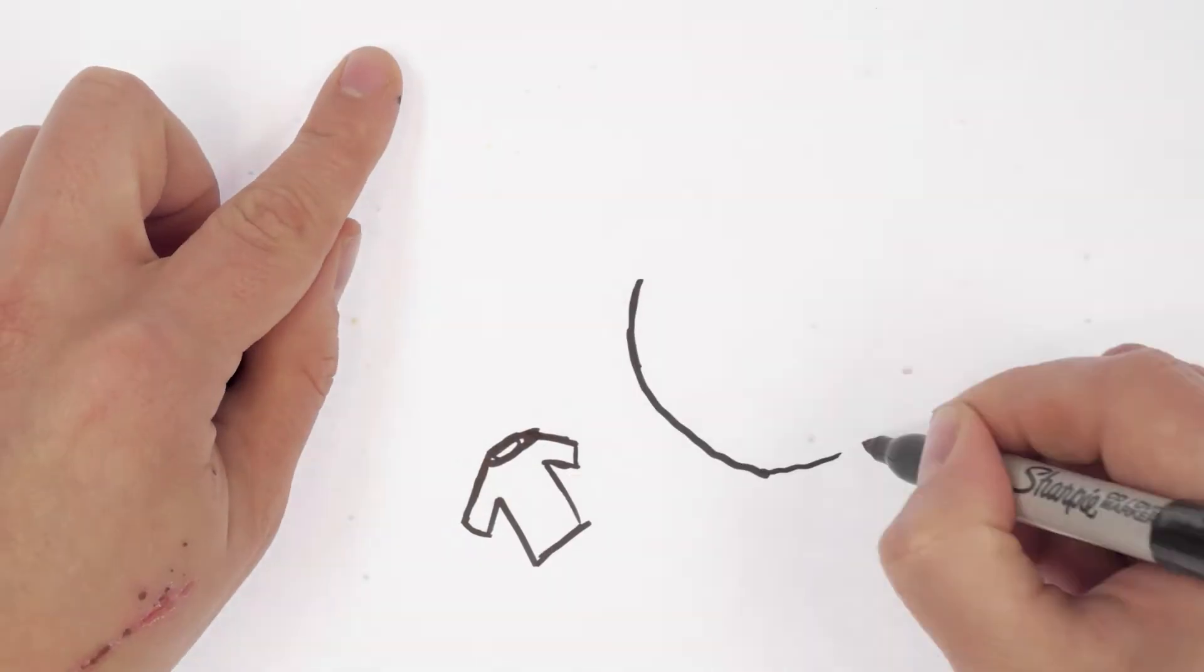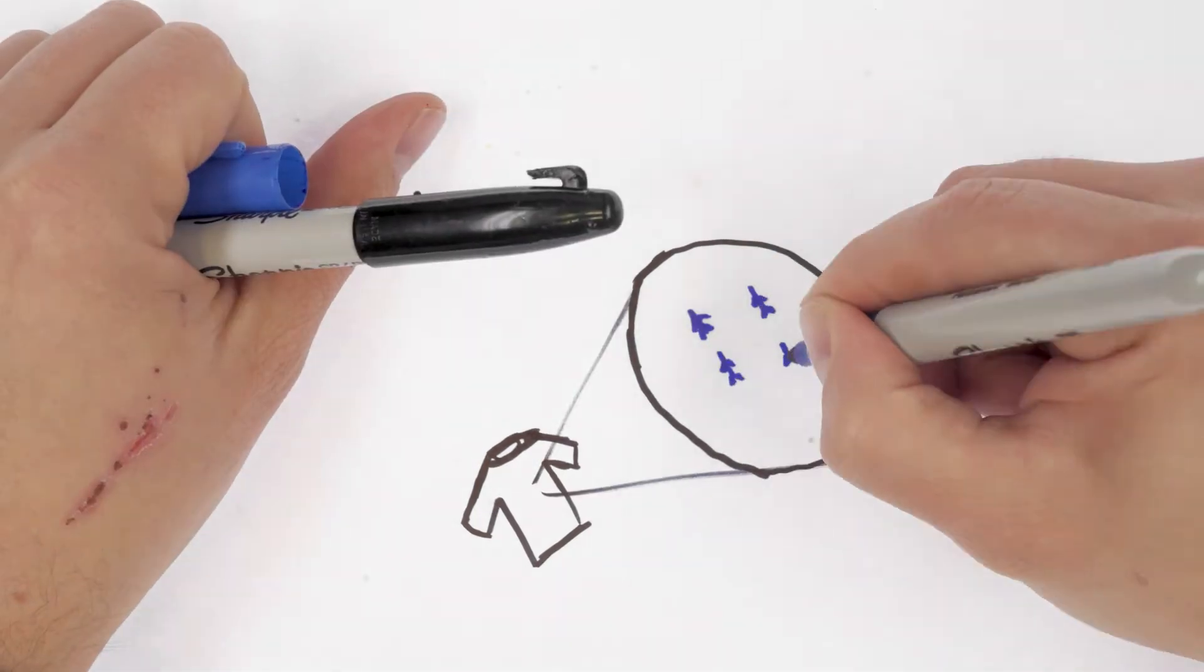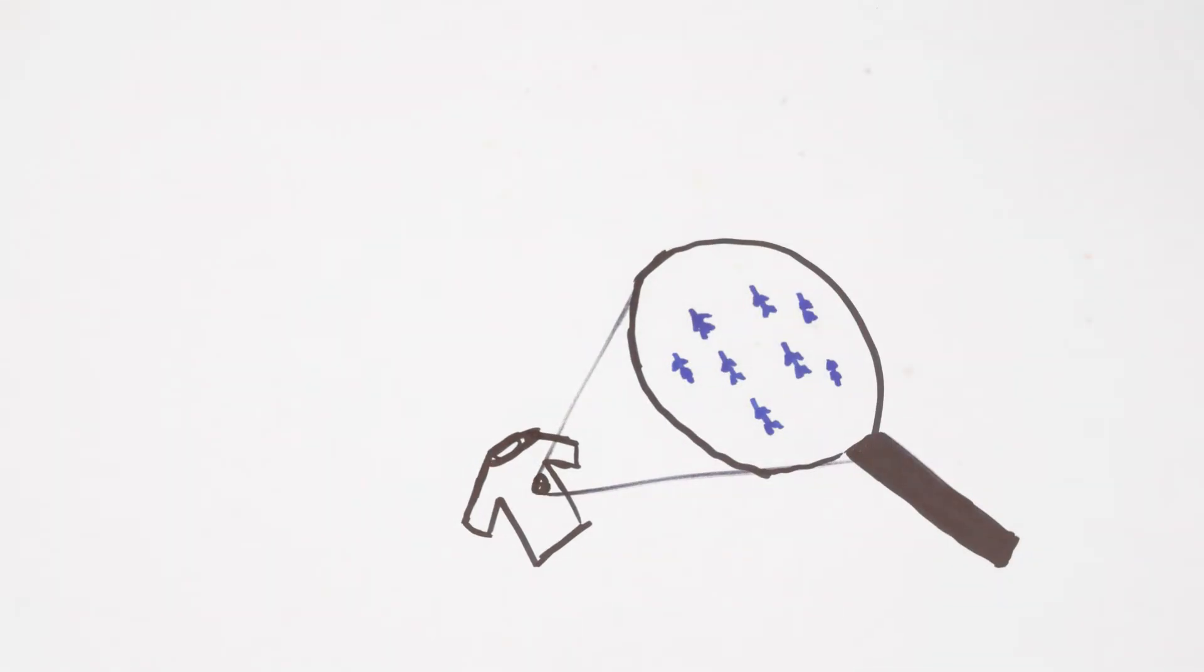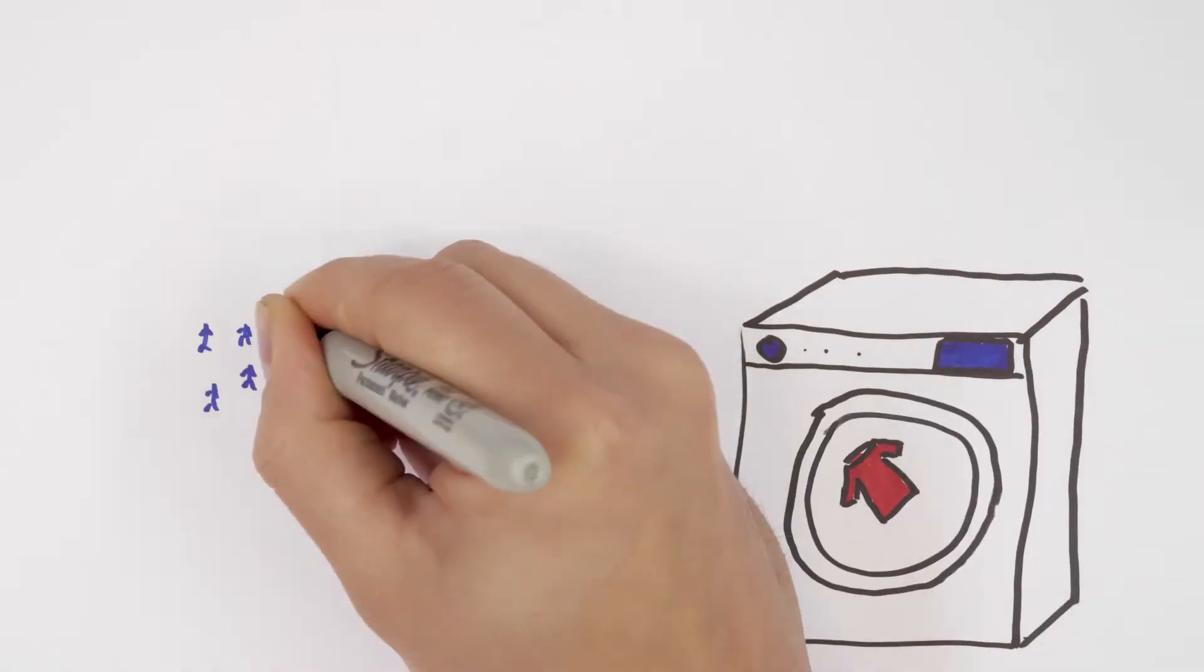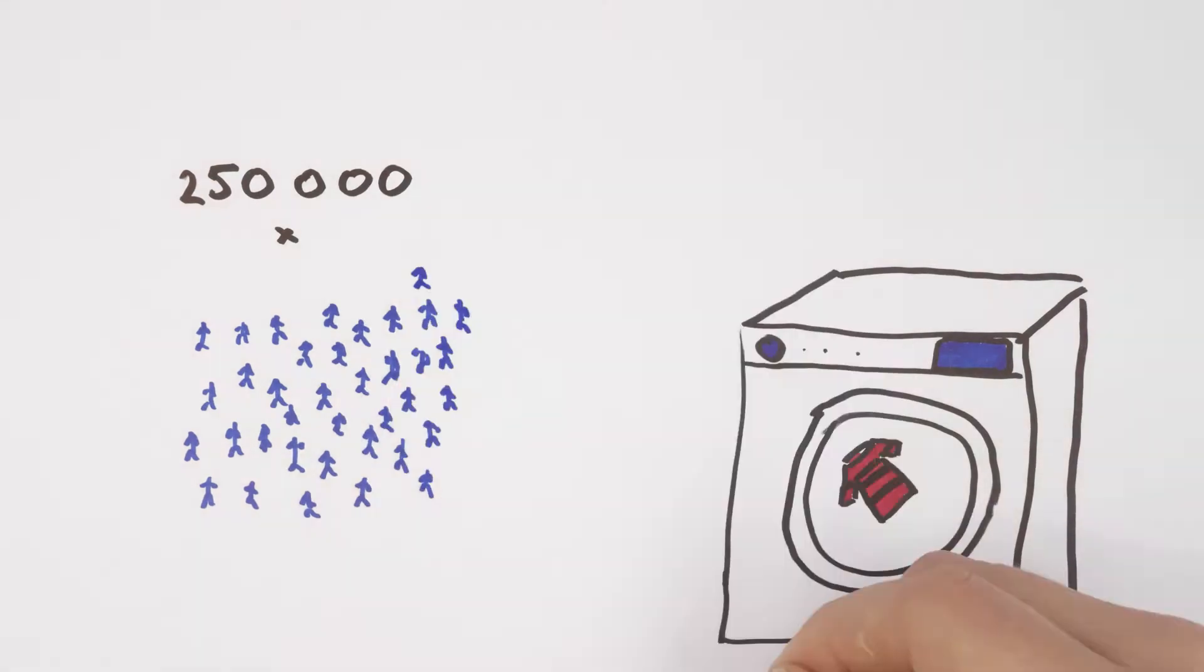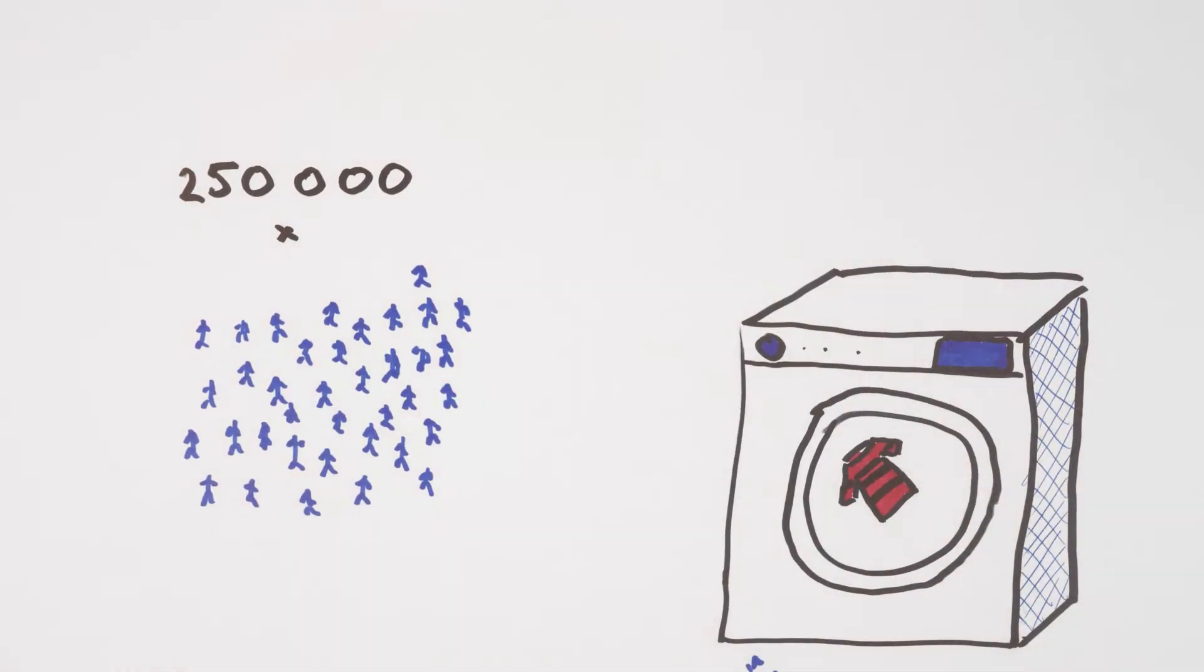It turns out that microfibres shed from synthetic clothing actually make up the lion's share of plastic pollution. And they are everywhere. The ocean, our tap water and even the air. Just one machine wash of a jumper made out of synthetic material can shed up to 250,000 microfibres.